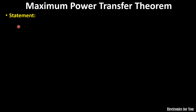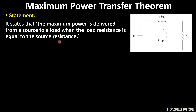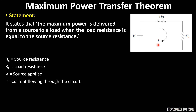The statement for maximum power transfer theorem is that the maximum power is delivered from source to load when load resistance equals source resistance. Here RS is the source resistance, RL is the load resistance, V is the voltage supply applied at the source, and the current flowing through this circuit is I.